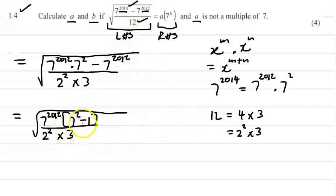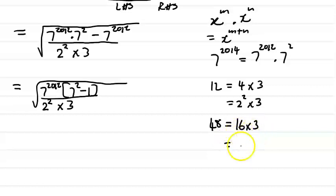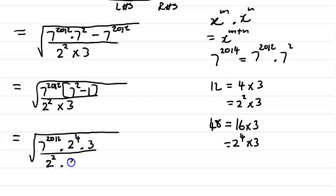7 squared minus 1 is 49 minus 1, which equals 48. We can express 48 as a product of its prime factors: 48 is 16 times 3, and 16 is a perfect square, so 16 is 2 to the 4. Therefore 48 equals 2 to the 4 times 3. You can use your calculator for this. So we're left with 7 to the 2012 times 2 to the 4 times 3, all over 2 squared times 3.